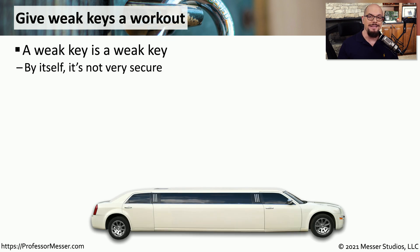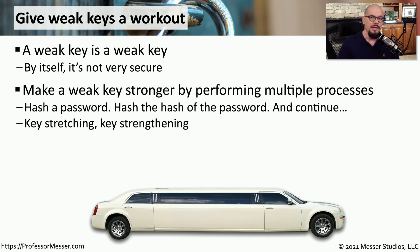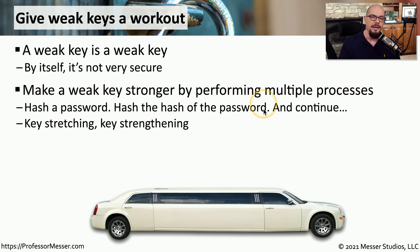Because larger keys tend to be more secure, we like to use encryption methods that use the largest possible keys. But we don't always have a large encryption key available. So instead of using a large encryption key, we'll take a relatively small encryption key and find ways to make it larger. For example, we could hash a password and then hash the hash of the password, and so on. This is sometimes referred to as key stretching or key strengthening.